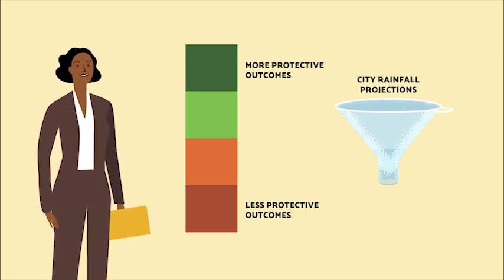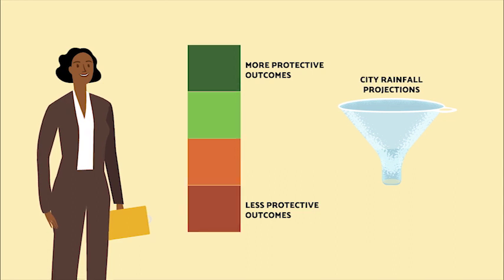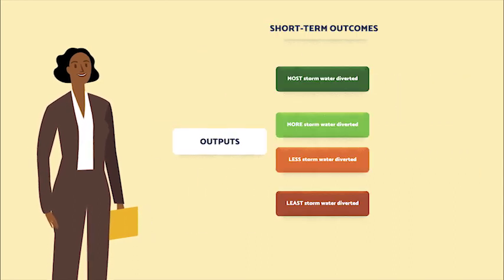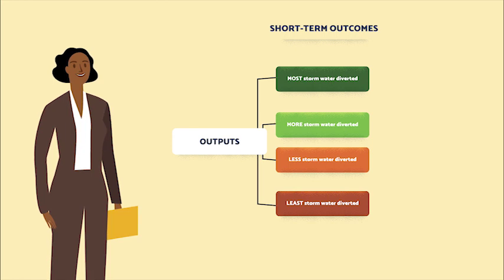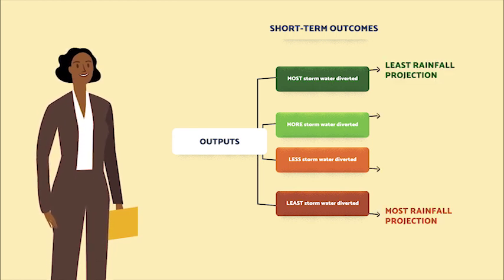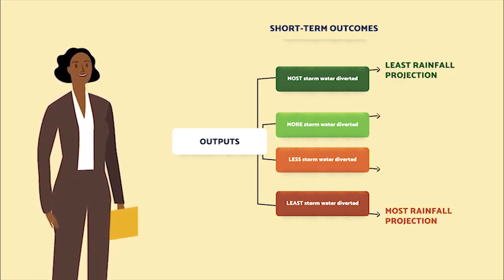Cassandra stands next to a logic model with four vertical colored sections: dark green, light green, light orange, and red. The top dark green box is labeled 'more protective outcomes' and the bottom red box 'less protective outcomes.' An illustration of a funnel labeled 'city rainfall projections' appears next to the logic model. By color coding according to different projection scenarios, Cassandra is able to show stakeholders the different impacts they might expect.